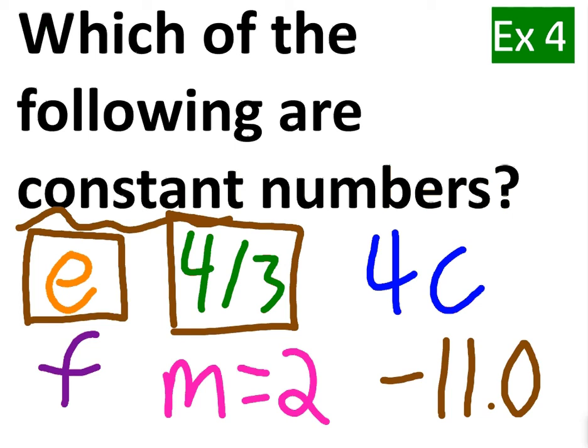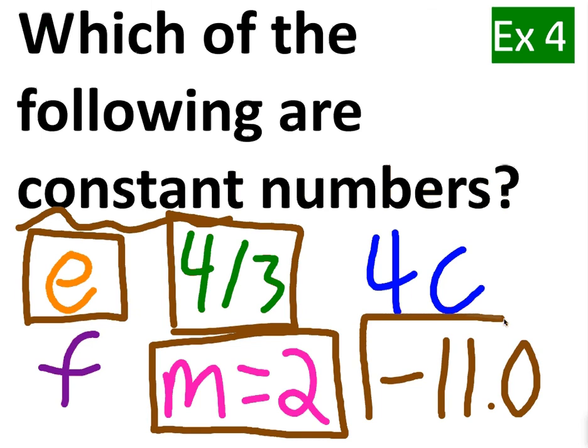M equals 2. Now, believe it or not, this is actually a constant number because we stipulated that it was equal to 2, and therefore it's not going to change. So if we had an equation with m and we said m is equal to 2, it cannot change. It will always be equal to 2. And finally, negative 11.0 certainly is not going to change. It's a negative decimal, but it's a constant number nonetheless.